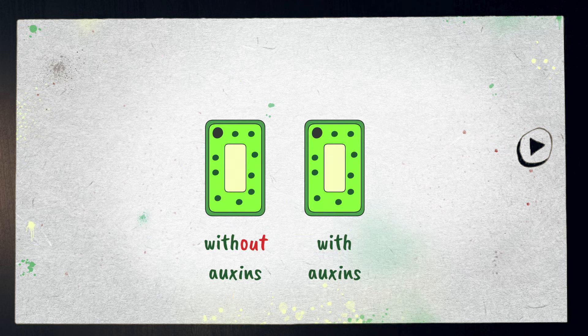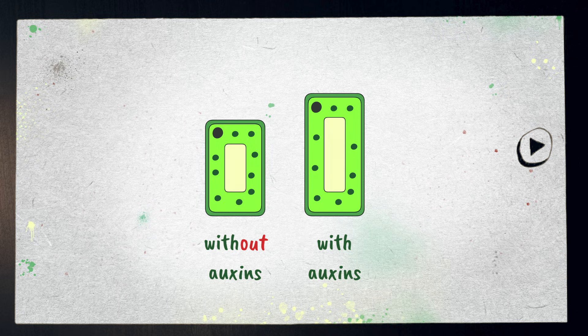Auxins can make cells get longer, which means if auxins were applied equally to all cells, the plant would grow taller.